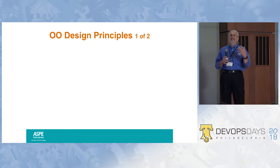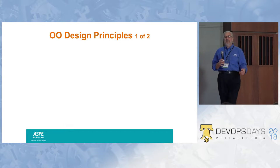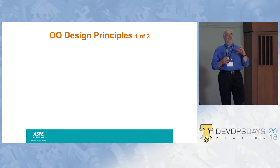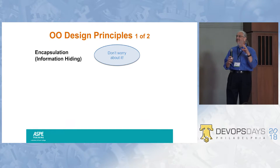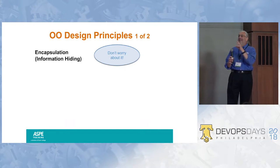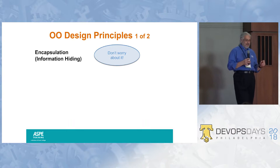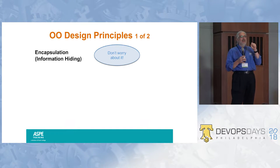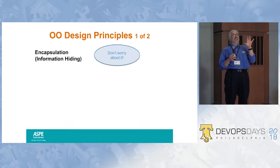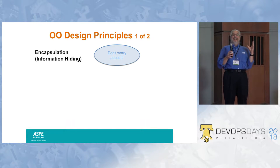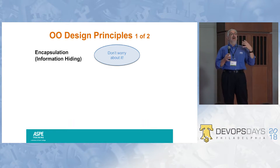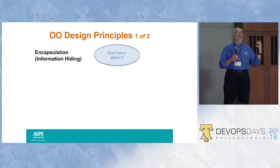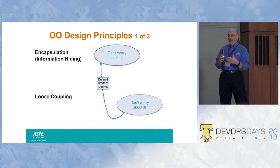So let's take a look at these OO Design principles. Let's start first with the heart of this, which is the idea of encapsulation. You hide the details of what's going on inside the service. The service presents an interface — it has a shell, a skin — and other services don't need to worry about what's going on inside that service.